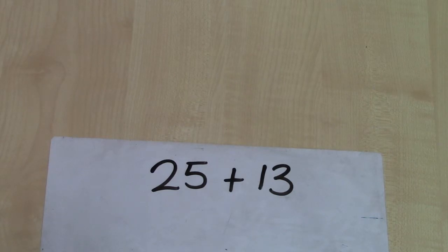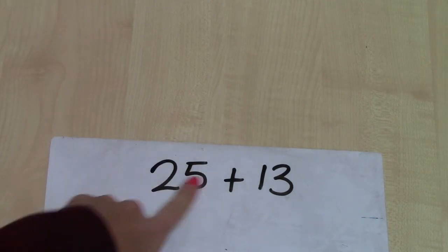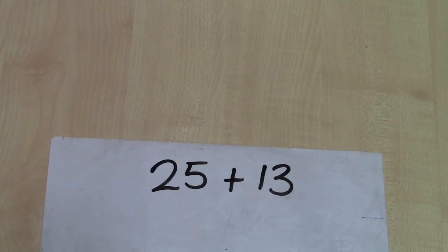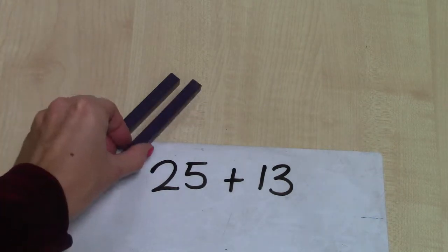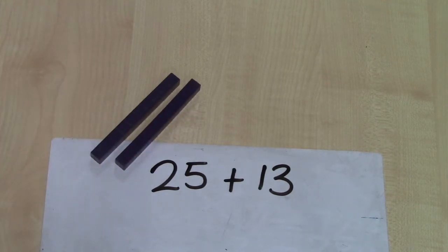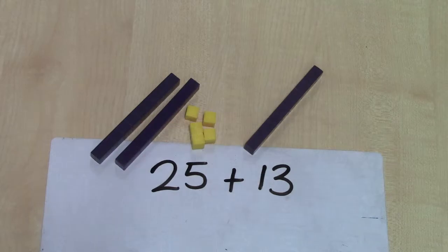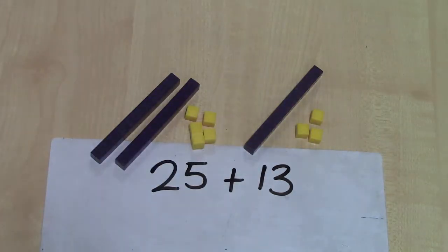We're going to use Dienes blocks to help support this. Using my place value knowledge, 25 means I've got two tens - 10, 20 - and I've got five units. And 13 is made up of one ten and three units.